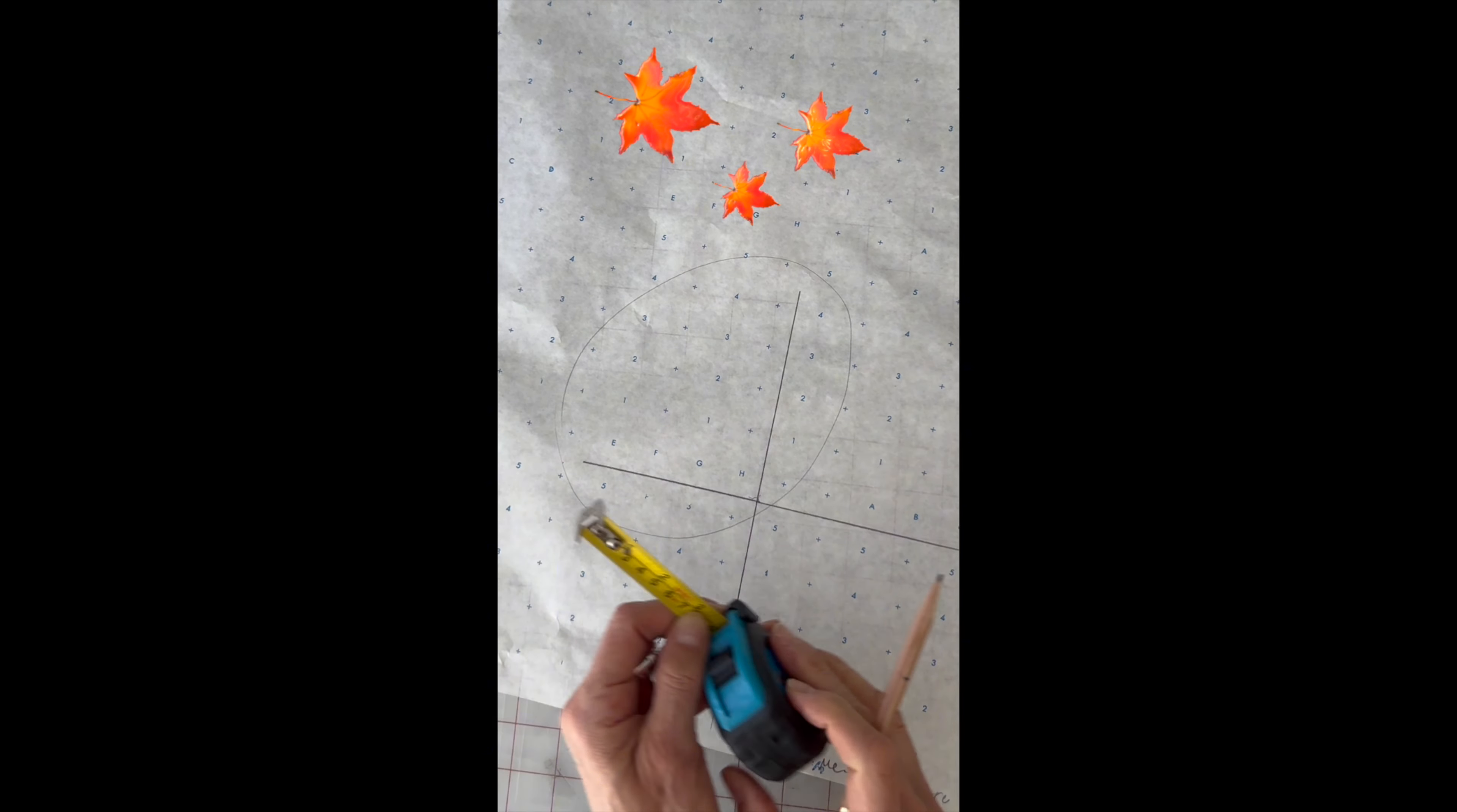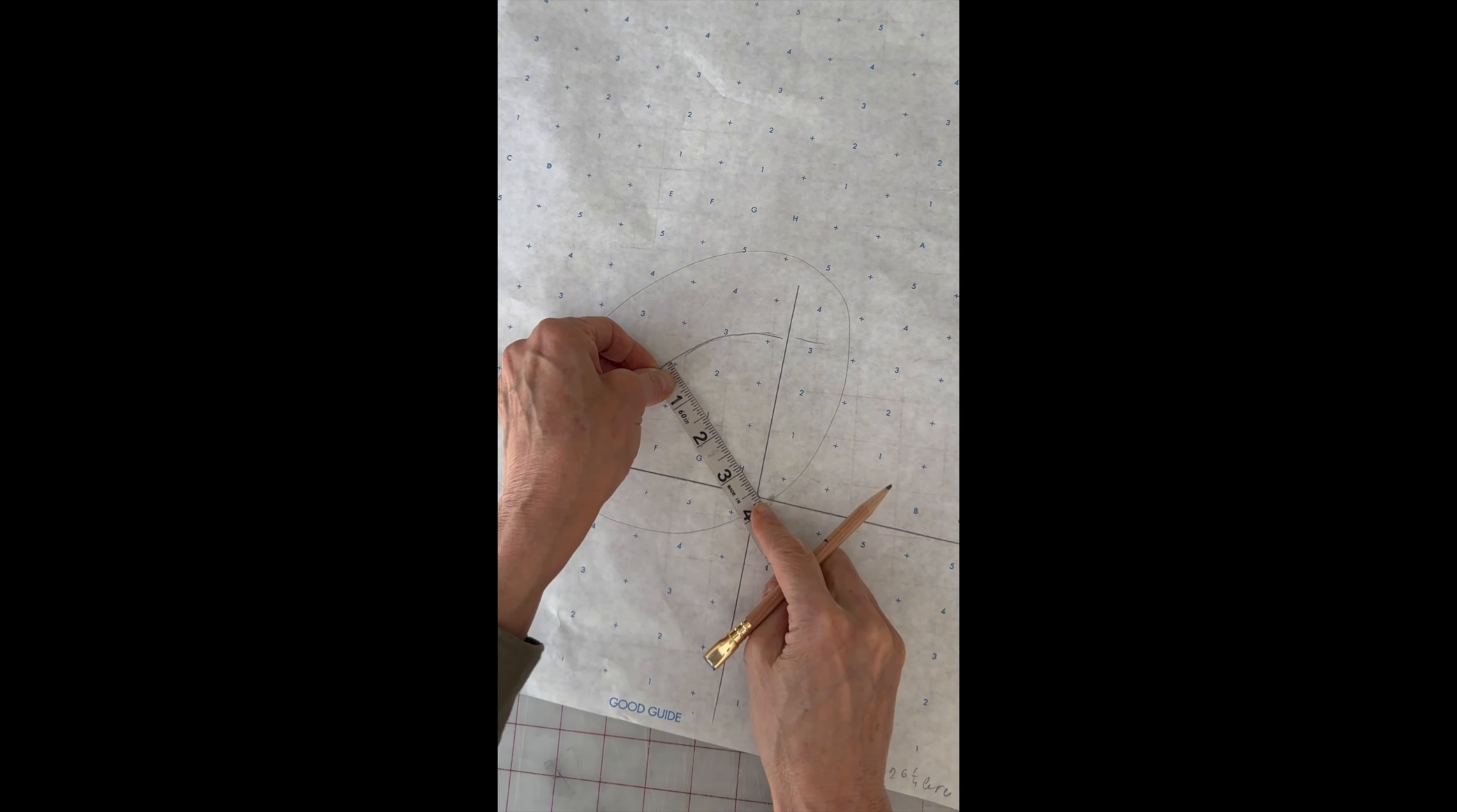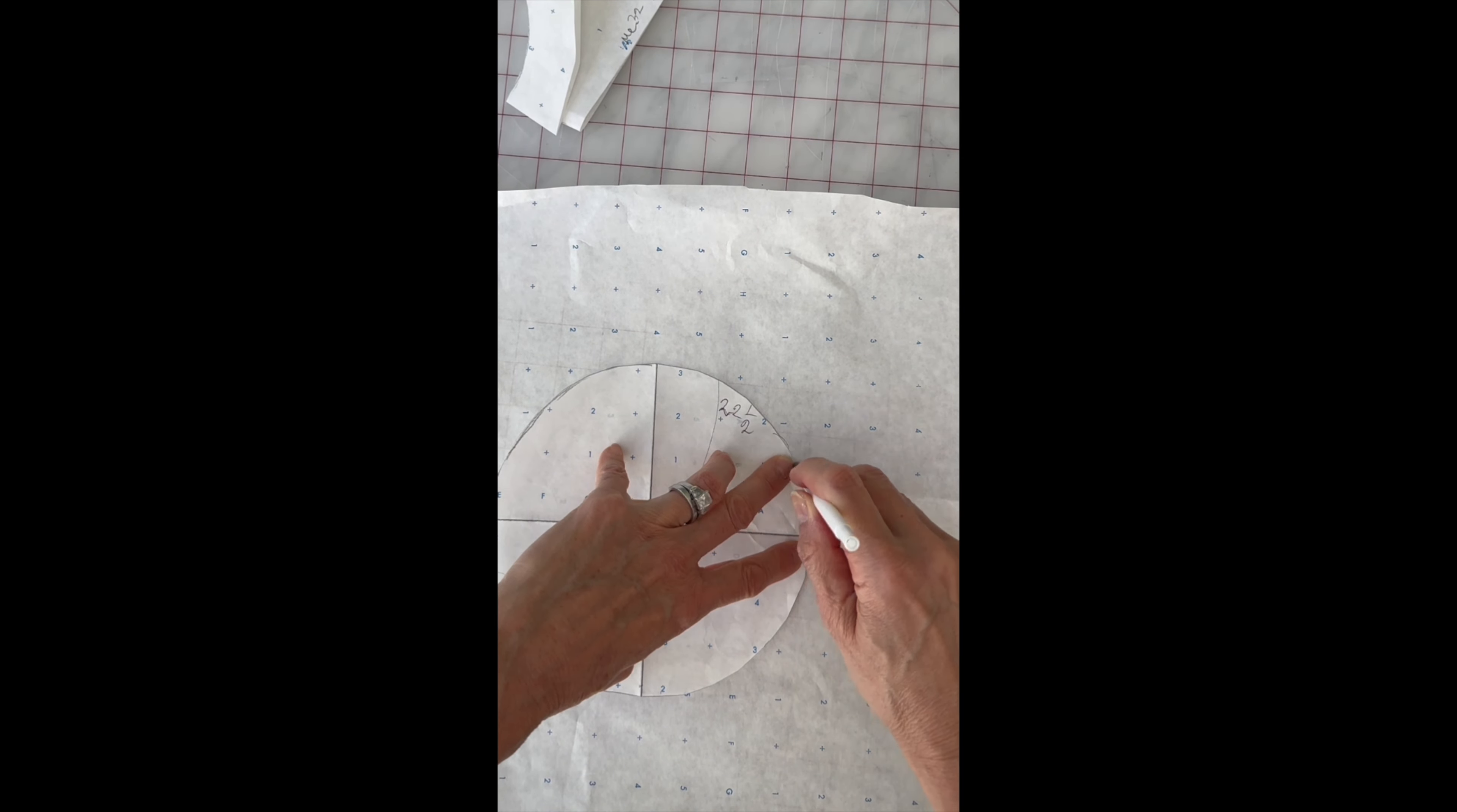Let's make that circle with 3.58 inch radius. Use the carpenter's tape again. You can simply draw a quarter of the circle, and then cut it out.